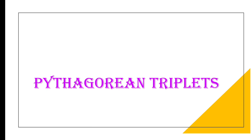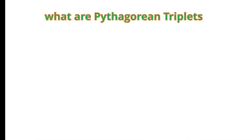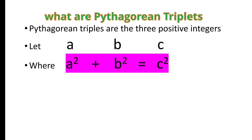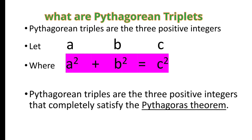Hello students, let us learn today about Pythagorean triplets. Triplets means a set of three — but in Pythagorean triplets, this is a set of three positive integers. Let us take three positive integers a, b, and c, where a and b are smaller than c. The condition is: the sum of the squares of the two smaller numbers must be equal to the square of the third, biggest number.